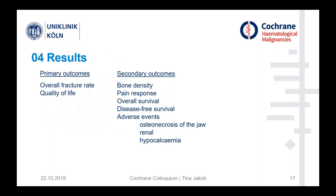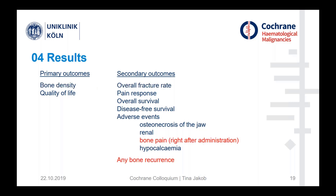This was the list of outcomes we initially planned. After the discussion, we changed the order of two outcomes — bone density became the first outcome and overall fracture a secondary outcome. This was due to the women describing that bone density was measured very regularly and they felt in control by seeing how the medication worked. Since none of them had any fractures, they didn't consider that the most important outcome. We also added bone pain right after administration and the occurrence of bone metastasis as additional outcomes.